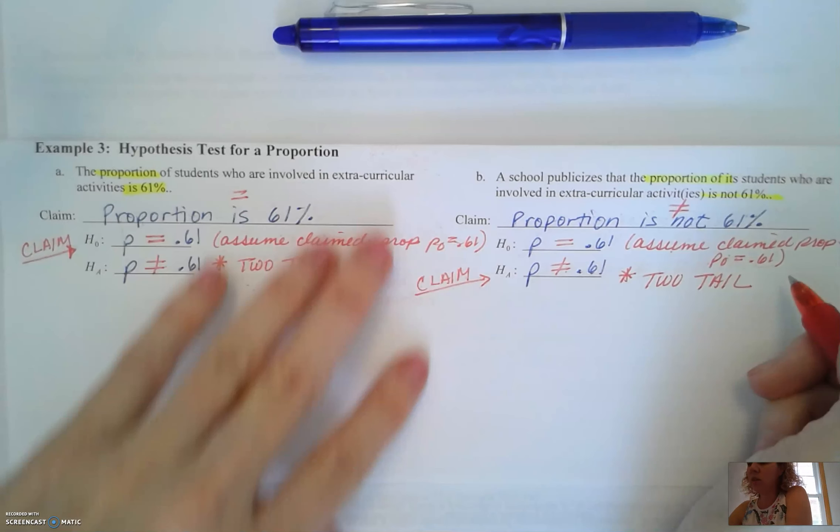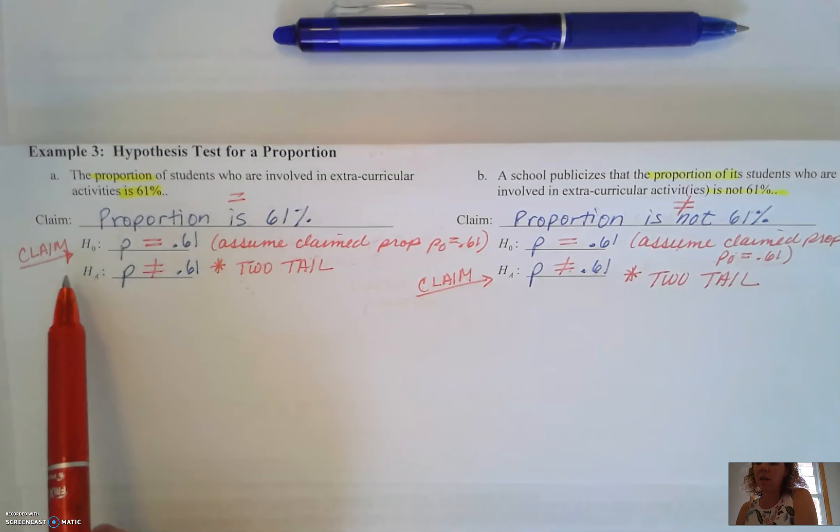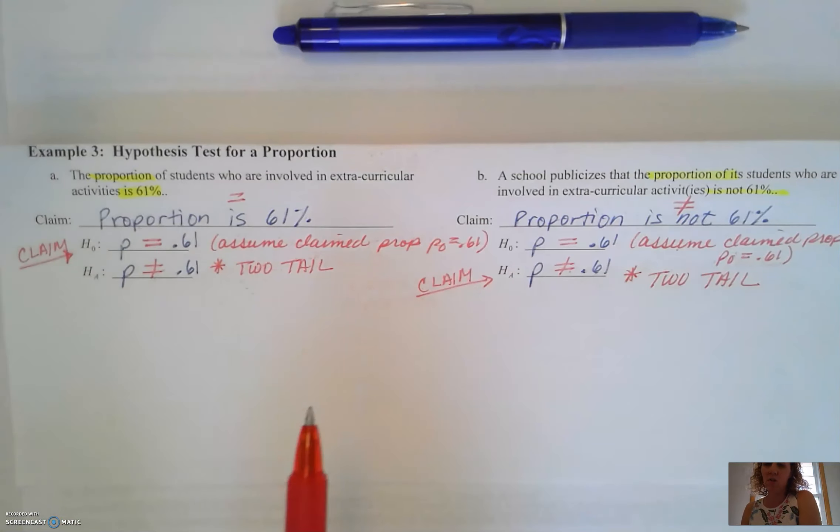The only difference between these two problems is the fact that in part A the claim went with the null hypothesis and in B the claim went with the alternative hypothesis.